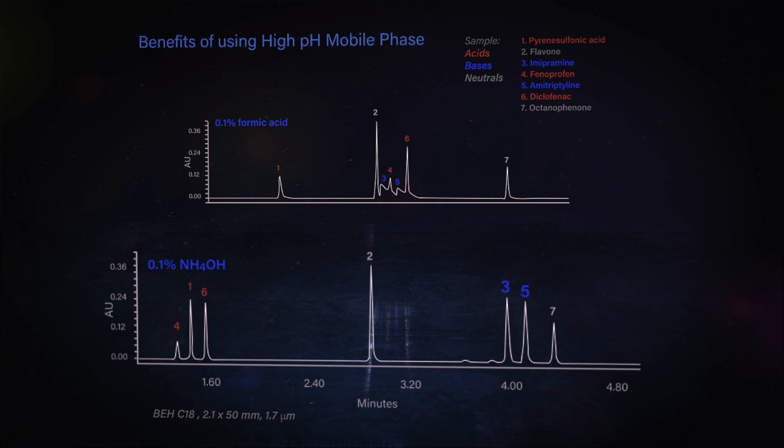Where the basic analytes now, they're becoming unionized or more hydrophobic, and they're getting much better retention. And because they're unionized, they don't have that shark fin-like peak shape. And peaks two and seven, since they're neutral, they don't move no matter what the pH is, as you'd expect.